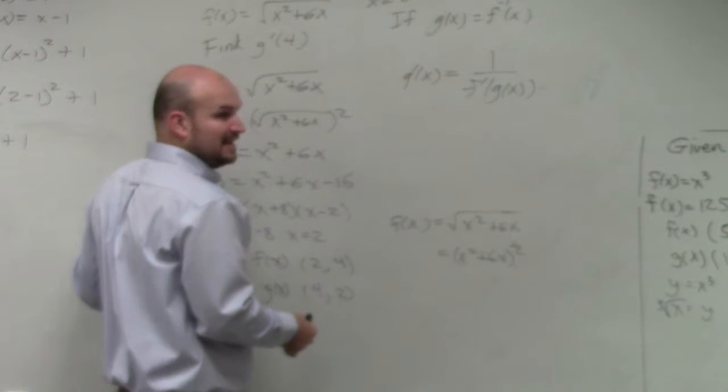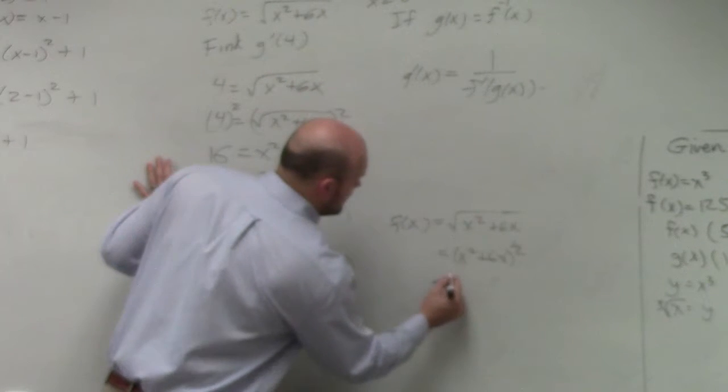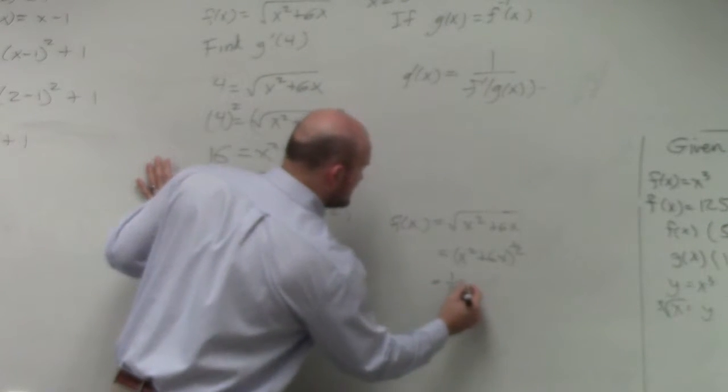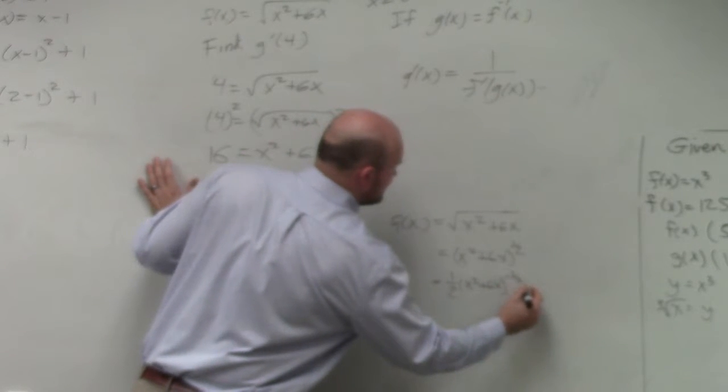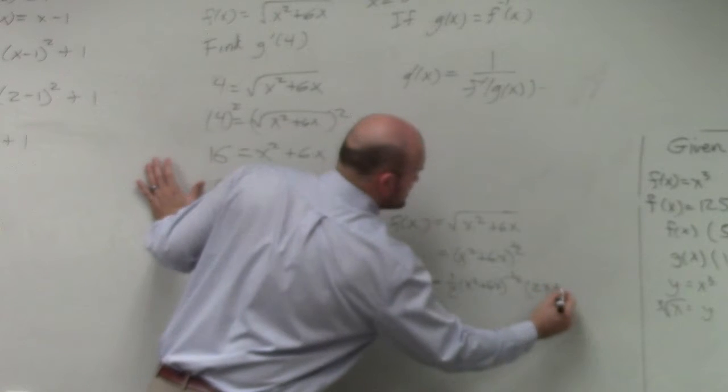Then by applying the power and chain rule, I have 1 half times x squared plus 6x to the minus 1 half times 2x plus 6.